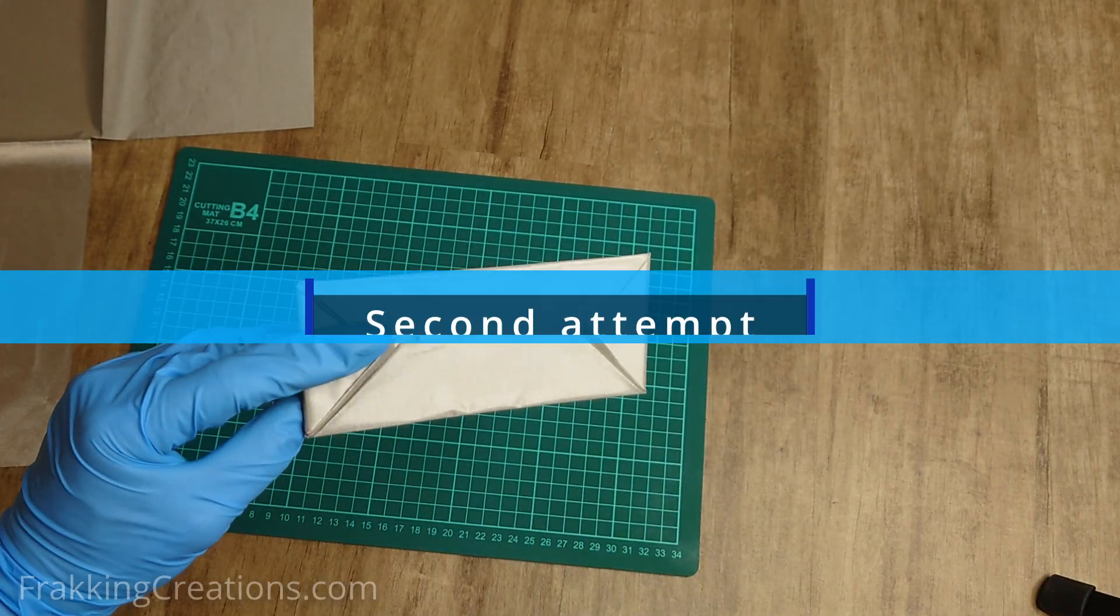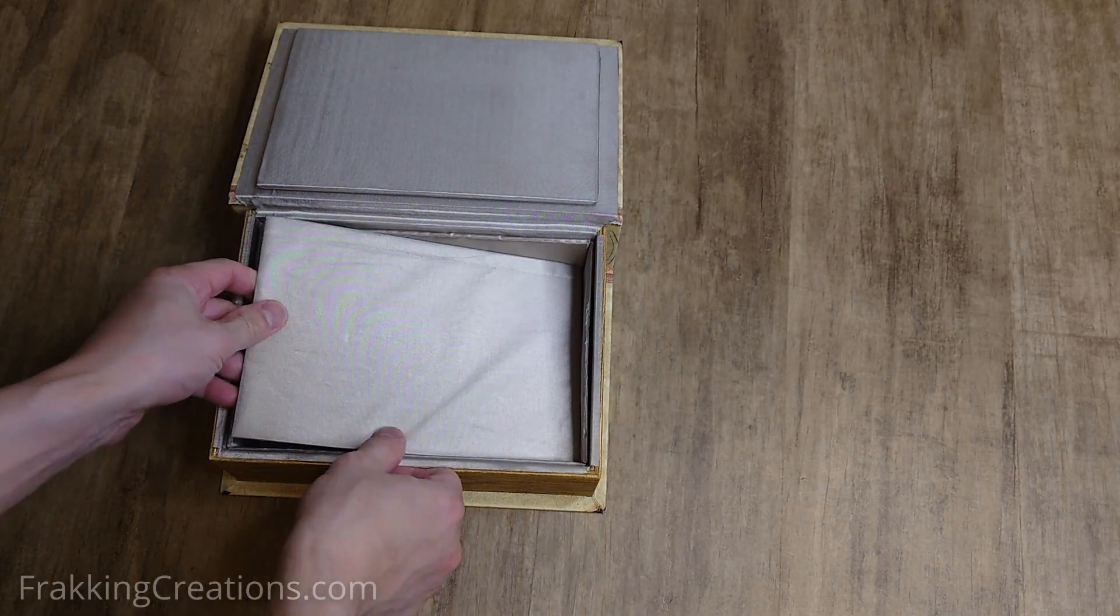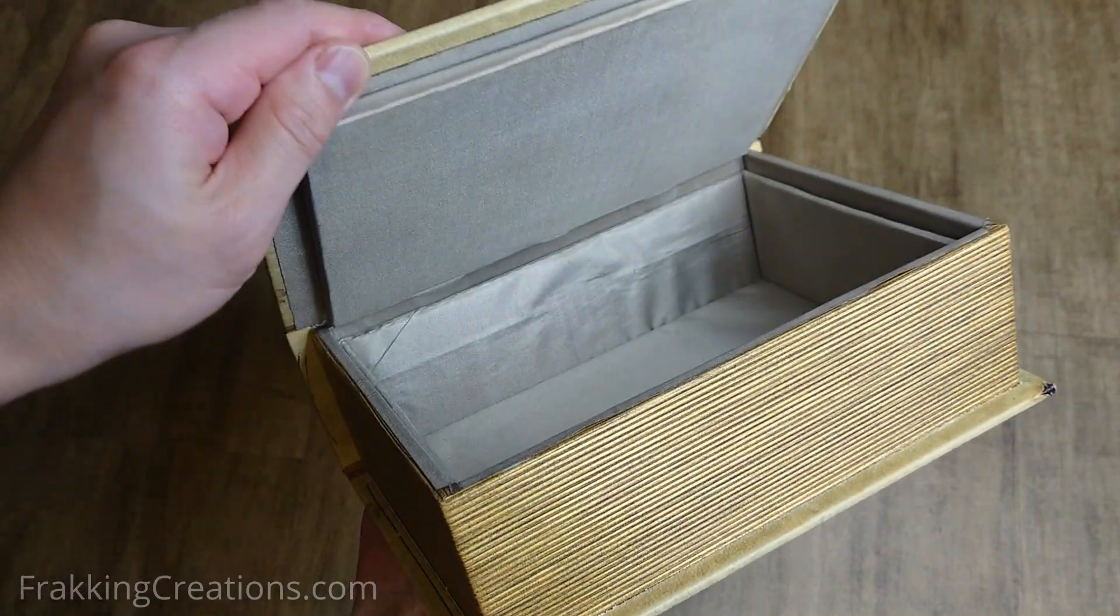Second attempt. I decide to add additional shielded side and bottom panels to the inside of the box. I'm also hoping that the side panels will work with the inner lid panel to better seal the opening.